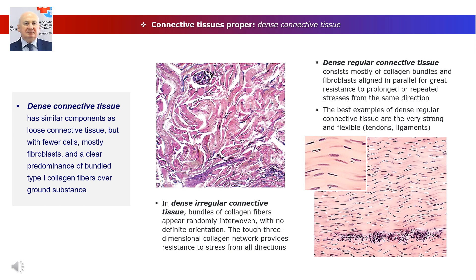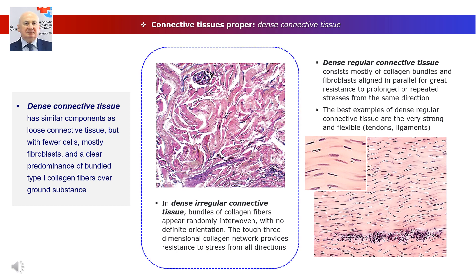Dense connective tissue has similar components as loose connective tissue but with fewer cells — mostly fibroblasts — and a clear predominance of bundled type 1 collagen fibers over ground substance. The abundance of collagen protects and strengthens organs structurally. In dense irregular connective tissue, bundles of collagen fibers appear randomly interwoven with no definite orientation. The tough three-dimensional collagen network provides resistance to stress from all directions. Examples include the deep dermis layer of skin and capsules surrounding most organs.